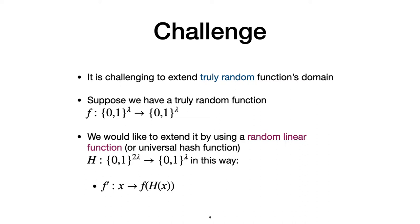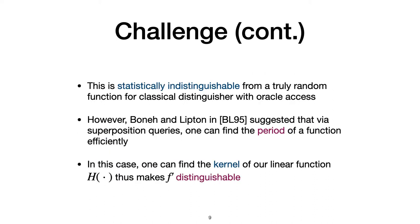Suppose we have a truly random function, f, mapping between two lambda bit strings. We would like to extend it by using a random linear function, or universal hash function h. In this way, we compute f' as f of h of x. This is statistically indistinguishable from a truly random function for classical adversaries with oracle access. However, Bernstein and Vazirani in BV95 suggested that one can find the period of a function efficiently via superposition queries. In this case, one can find the kernel of our linear function h, thus makes this function f' distinguishable.